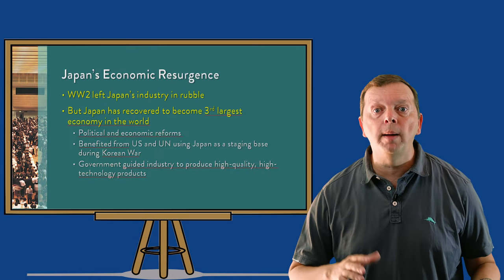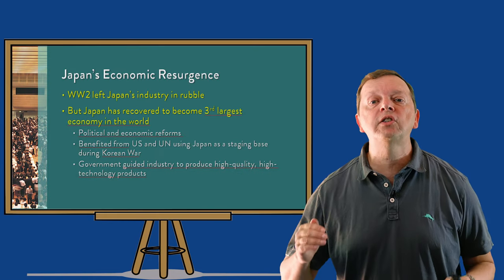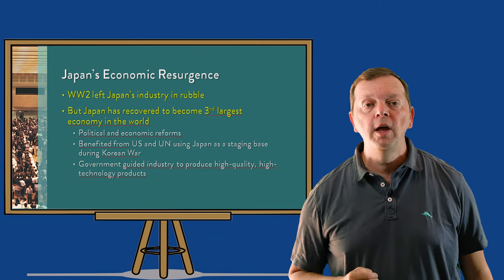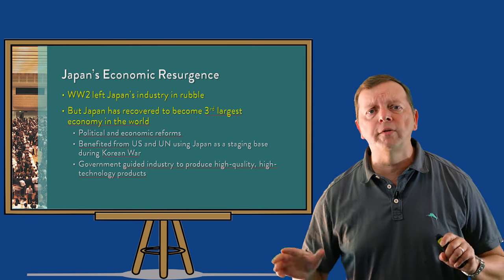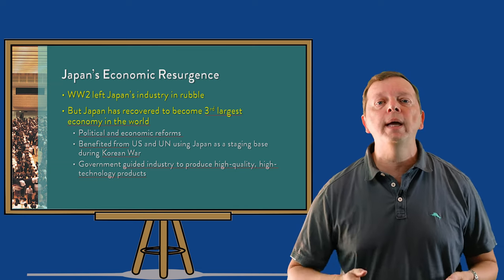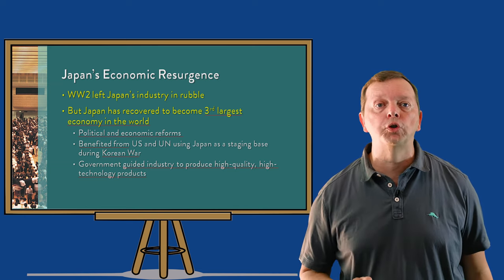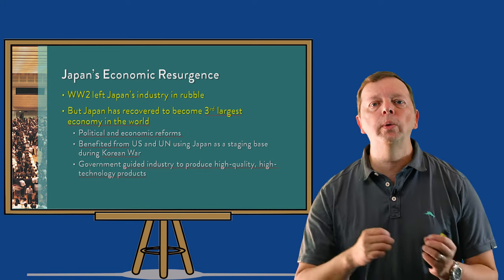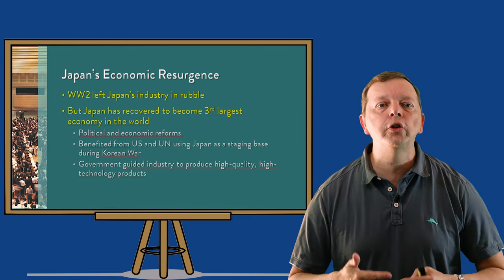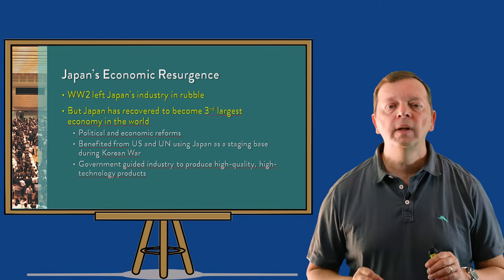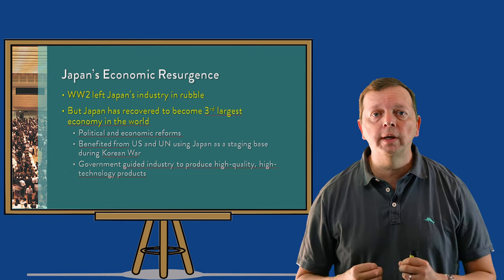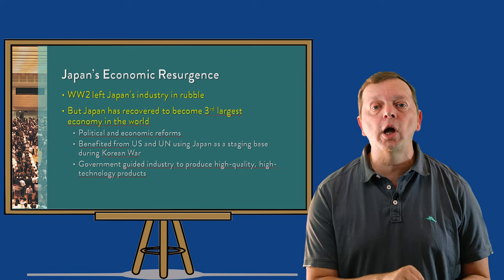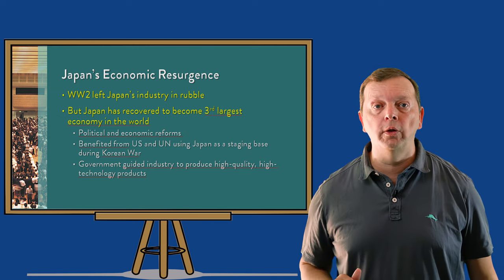Despite its industry largely being bombed into rubble during World War II, Japan took several steps to grow into the third largest economy in the world. Right after the war, Japan made several political and economic reforms that made it easier to do business and trade. Then, during the Korean War, it had lots of money coming in from the United States and UN countries as they were using Japan as a base of operations. With this foreign investment, the government wisely guided industry to produce high-quality, high-technology products they could sell around the world.